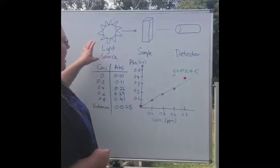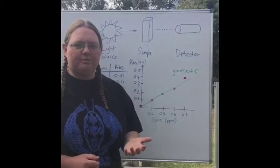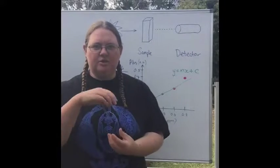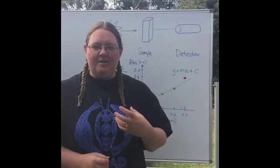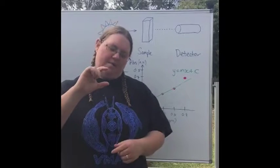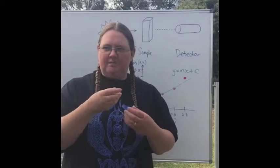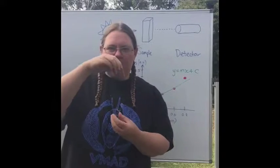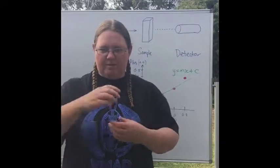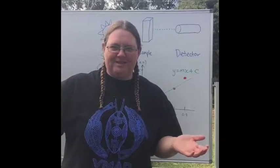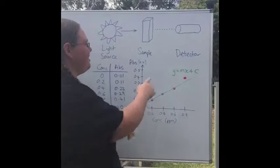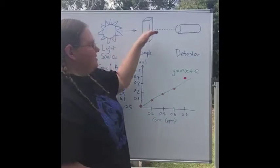Our light then travels through our sample. In the case of UV-visible analysis, your sample is usually housed in what's called a cuvette. A cuvette is essentially one centimeter by one centimeter by about three and a half to four centimeters, and you put your sample into it and the light passes through.